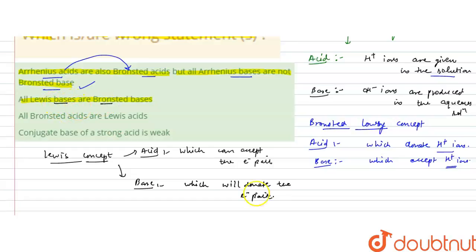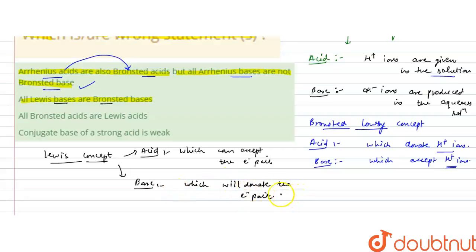A Lewis base donates an electron pair, while a Bronsted base accepts H⁺ ions. It is not necessary that a species which donates an electron pair will also accept H⁺ ions. So this statement is incorrect — not all Lewis bases are Bronsted bases. This is an incorrect statement.